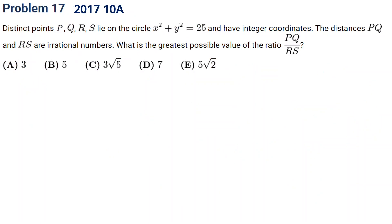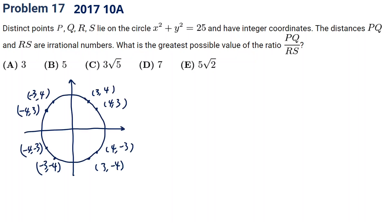Now that we know the general idea of the equation of a circle, let's look at some real math contest questions. This is from 2017 10A, problem 17 — let's pause and think about it. We can see this is clearly a circle equation with radius 5, and PQRS lies on the circle. The distance PQ over RS must be a rational number. RS should be as small as possible — so RS is an irrational number that's as small as possible, with length equal to the square root of 1 squared plus 1 squared, which is root 2.